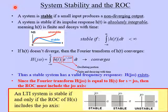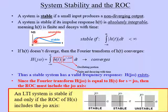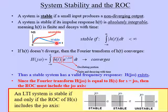Now let's turn to stability. Going back to chapter two, a system is stable if a small input produces a non-diverging output. A system is stable if its impulse response is absolutely integrable — meaning H of T is finite and decays with time. Here's an example: this red curve would be an example of an unstable system where the impulse response diverges or blows up with time. On the other hand, this blue curve would be an example of a stable system because its impulse response is well-behaved and decays with time.